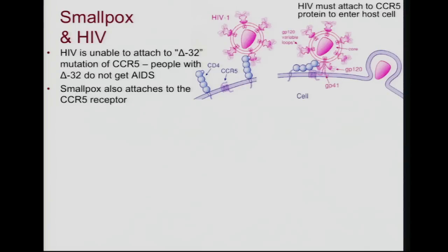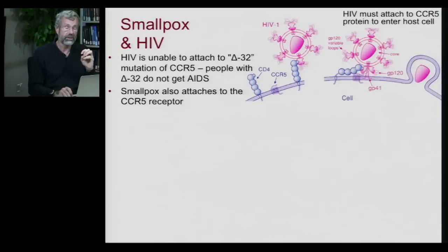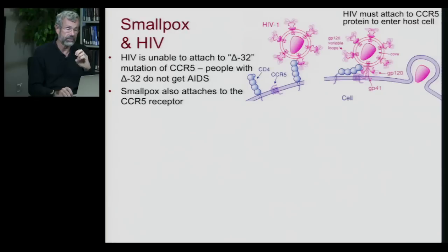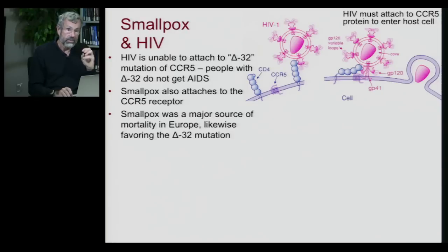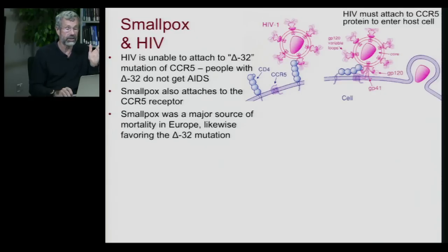As it happens, even more remarkably, HIV is not the only virus that requires the CCR5 receptor in order to penetrate a host cell. Smallpox also had to attach to that same receptor. Smallpox, being a major source of mortality in Europe for thousands of years, likewise favored the Delta 32 mutation. If you had that mutation, you wouldn't die of smallpox, so you'd have more surviving offspring, and the mutation would have spread.